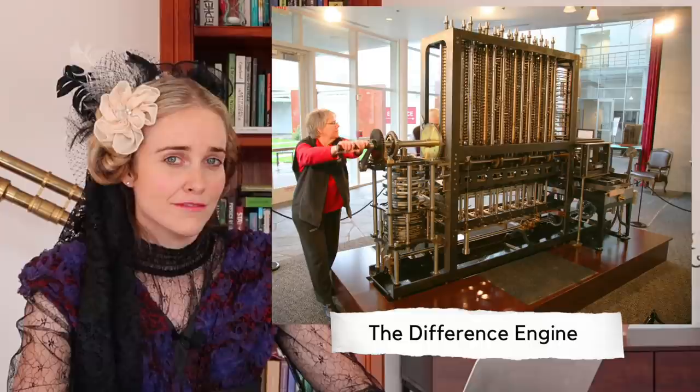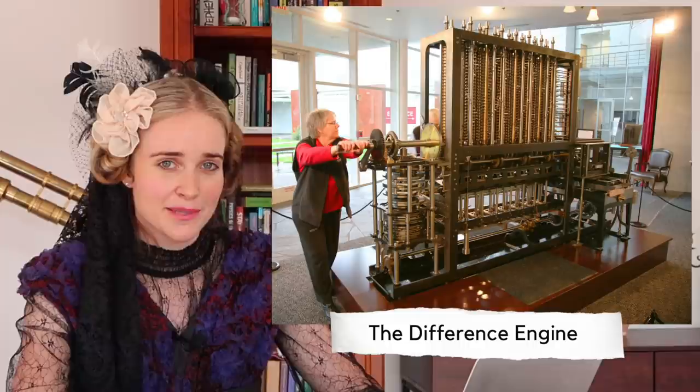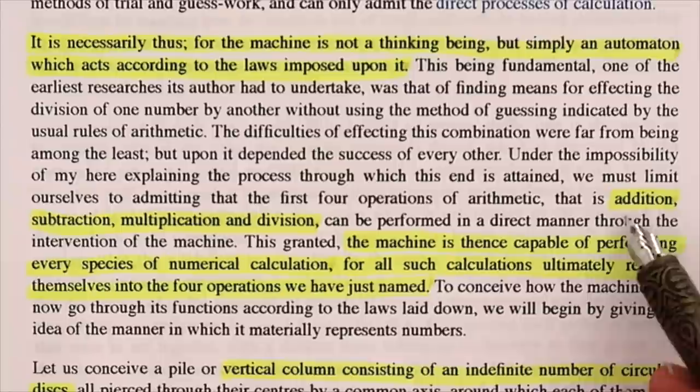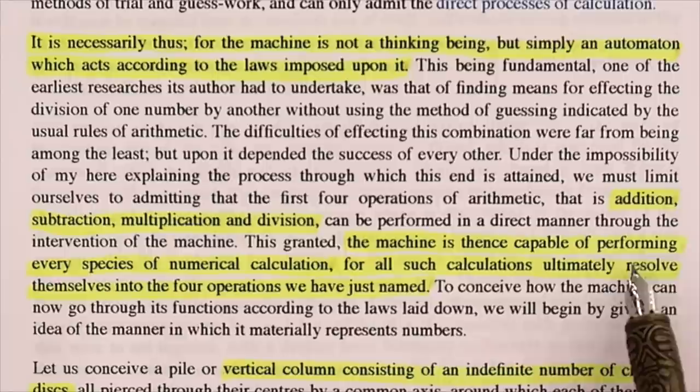Babbage himself ran out of money to ever finish building the difference engine, although he did have a small model of it. Since then, some clever people have finished it for him and made a complete version. Babbage kind of got distracted by his idea for a second type of engine — one that could do a lot more and was much more ambitious. This was the analytical engine. The analytical engine can perform addition, subtraction, multiplication, and division and is therefore capable of performing every species of numerical calculation.